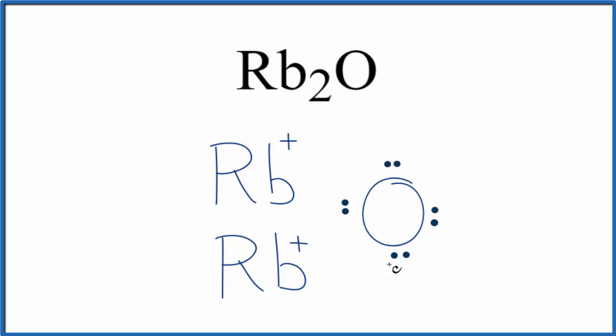The oxygen, it gained two valence electrons. Electrons are negative, so it's two minus. We'll put brackets around the oxygen to show that the electron was transferred from the rubidium. It's not shared, it's been transferred. Then we'll have that two minus on the outside.